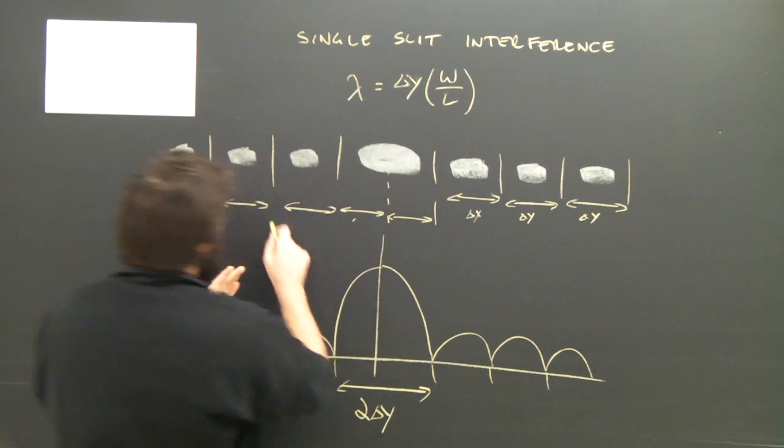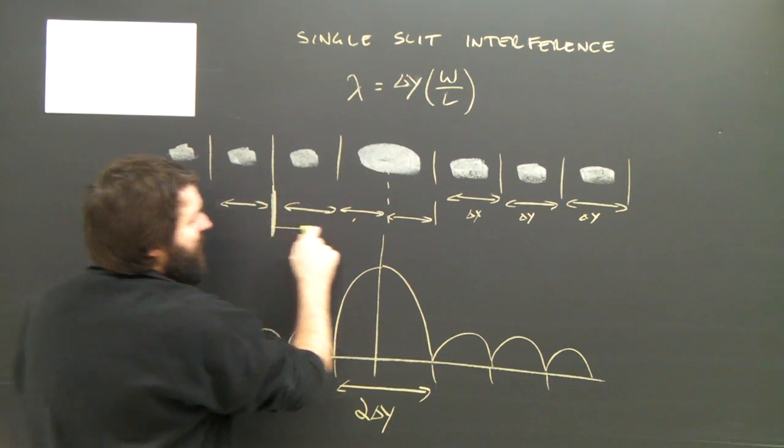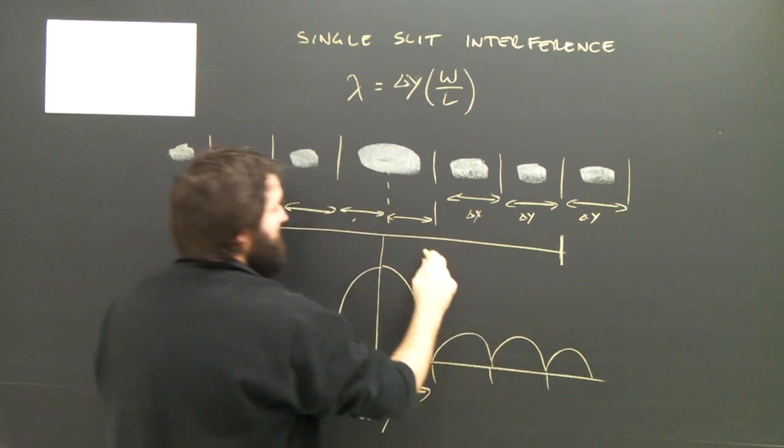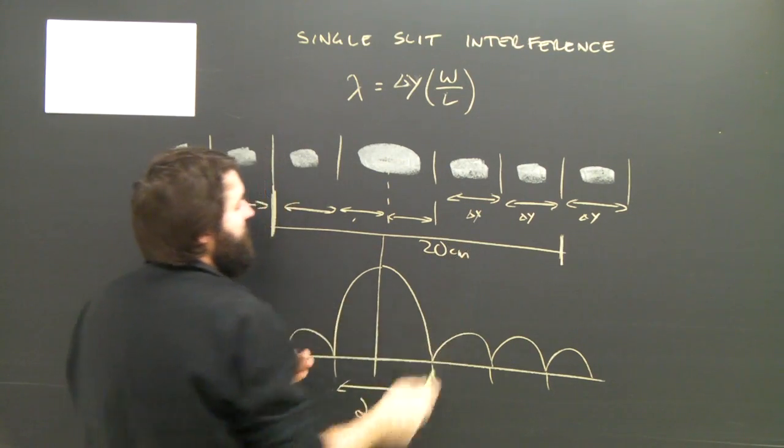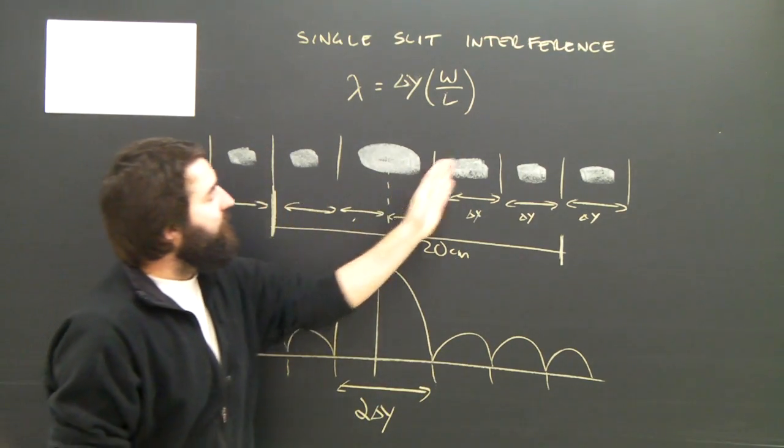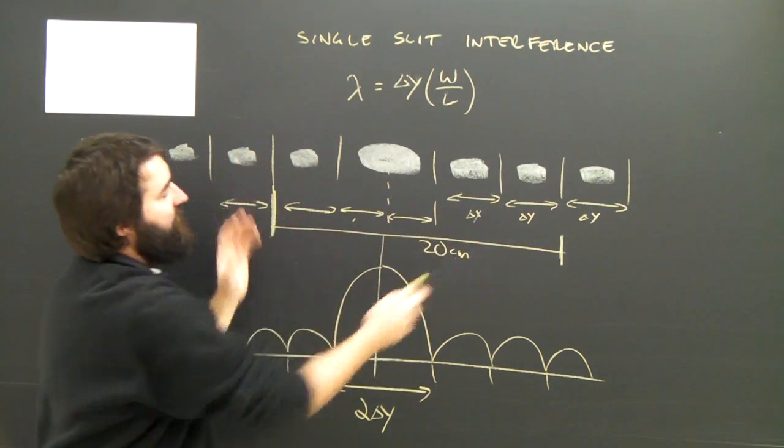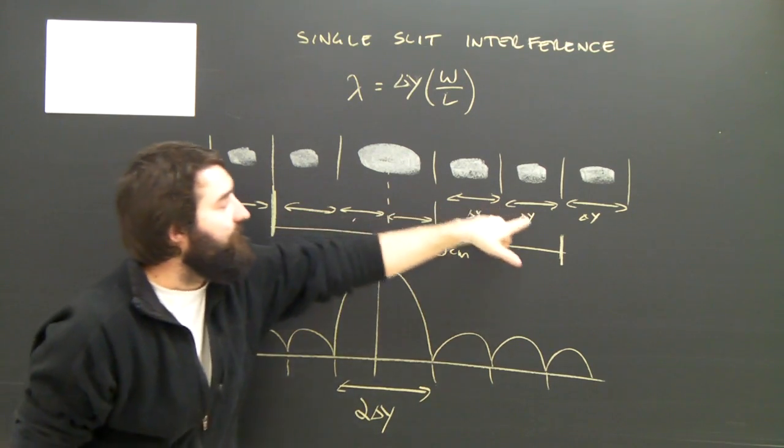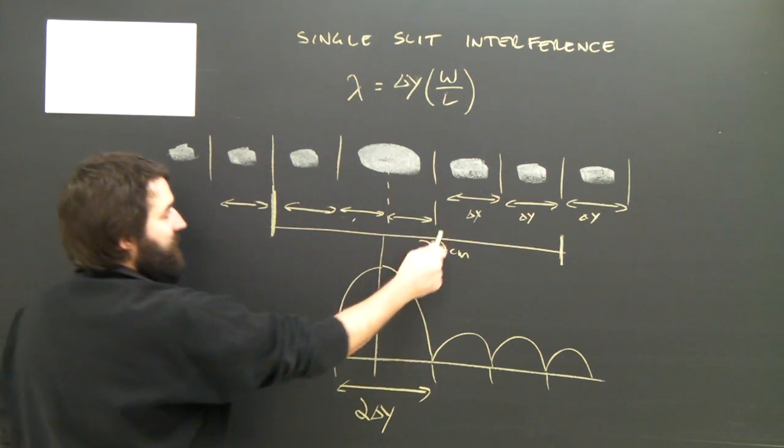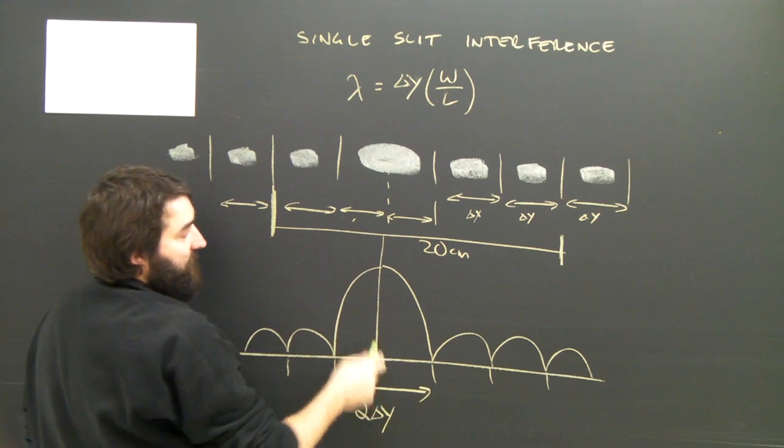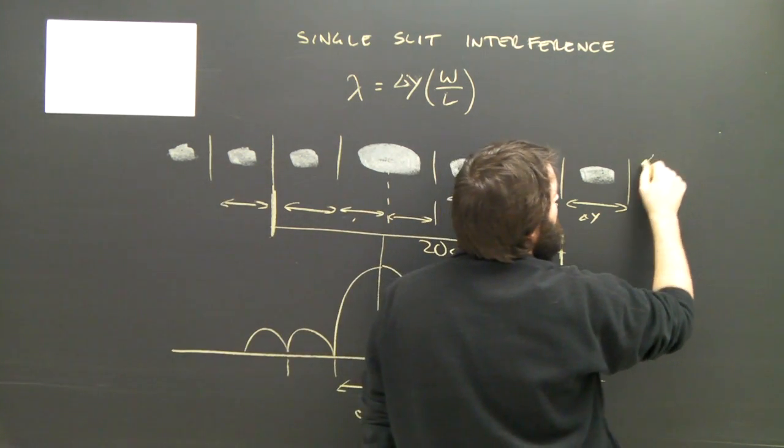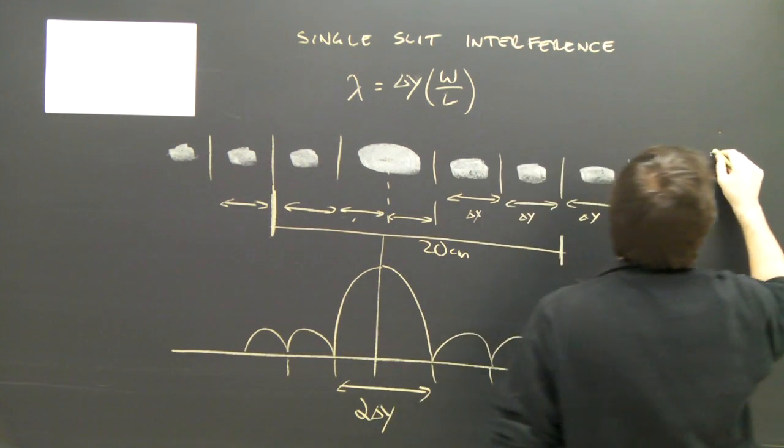Now, let's say you knew that the distance from here over to here was 20 centimeters. That's one, two, three, four, five dark fringes, but it's one, two, three, four, five delta y's, because we have to count two in the central region. So if that distance is 20 centimeters,